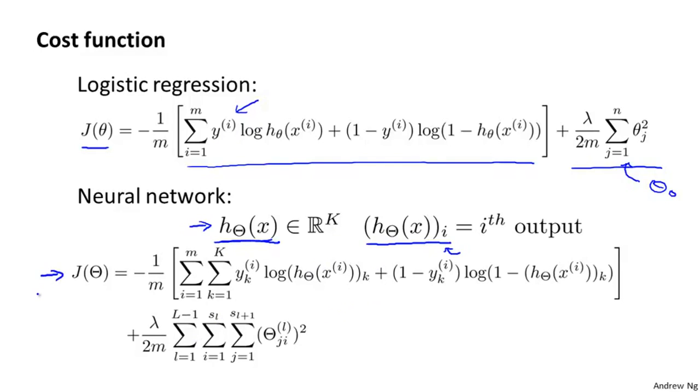My cost function J(θ) is now going to be minus 1 over m of a sum of a similar term to what we have for logistic regression, except that we have this sum from k equals 1 through K. This summation is basically a sum over my k output units. So if I have four output units, that is, if the final layer of my neural network has four output units, then this is a sum from k equals 1 through 4 of basically the logistic regression algorithm's cost function, but summing that cost function over each of my four output units in turn.